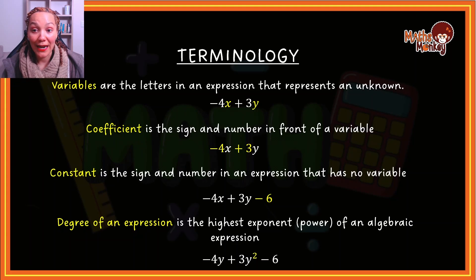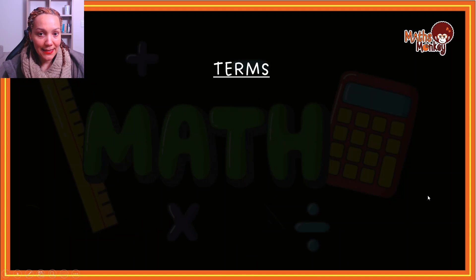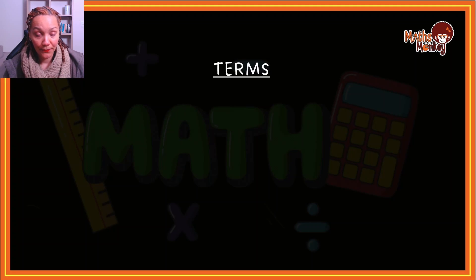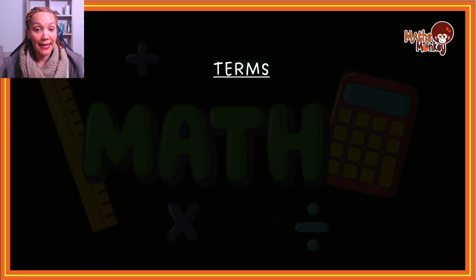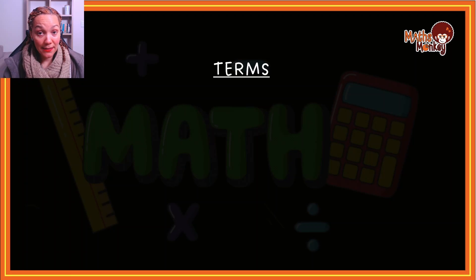So those are the basic, basic concepts of algebra. Now you understand when I say variable, coefficient, or constant, you'll know what I'm referring to. The second thing I want to look at is the concept of terms. The easiest way to explain this is that in an expression there are a certain number of terms — there can be one, two, three, or an infinite amount of terms. What separates terms is pluses and minuses that are not in brackets and not in a fraction.